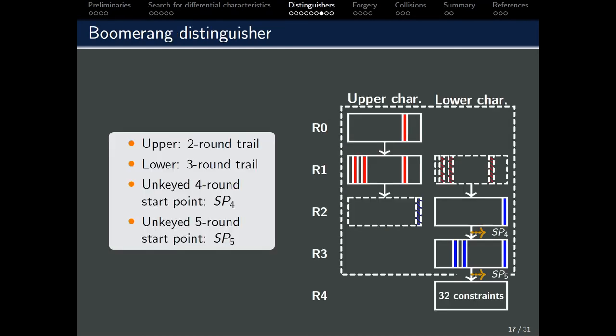Next, we move on to the boomerang distinguishers. Once again, when we are dealing with an unkeyed permutation, we can start from the middle. In the case of 4 rounds, we start at SP4, given over here in the diagram. In the case of 5 rounds, we choose to start at SP5, as there are more constraints in the R4.